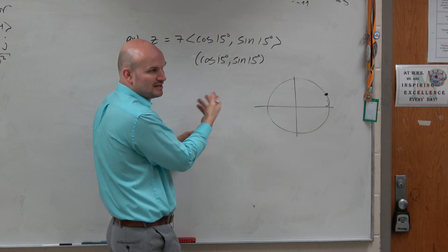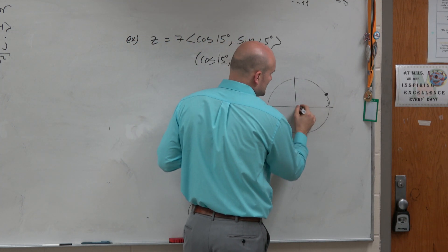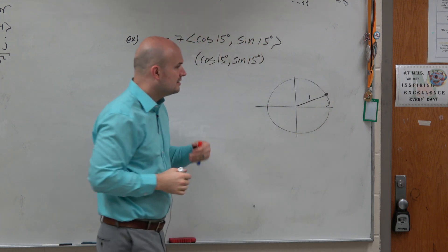Actually, we do remember half angle, double angle, like sum and difference. We figured that out. That gives us a point on the unit circle, which has a radius of 1.